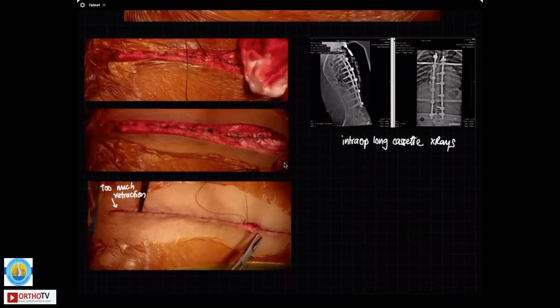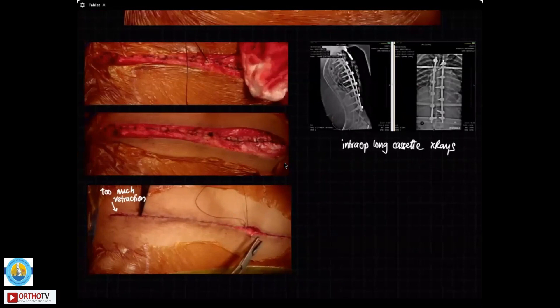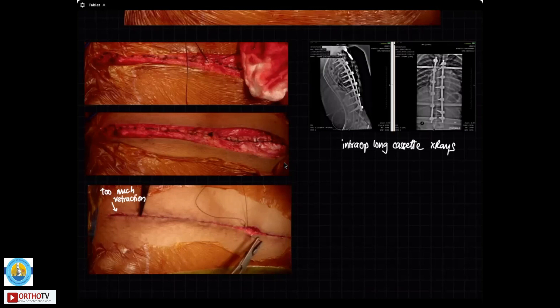And then you do a good closure and it's important that you do a very good subcuticular closure because these are cosmetic surgeries. And remember that if you do too much retraction at the end, this is what will happen. You will get all these edges will get injured and this leads to quite bad scar, especially just below the neck region. And that is visible, especially in girls, it is visible outside their dress because the rest of it is covered by their clothes.